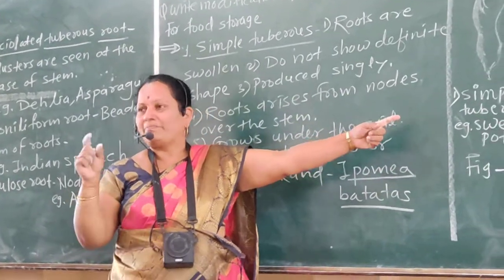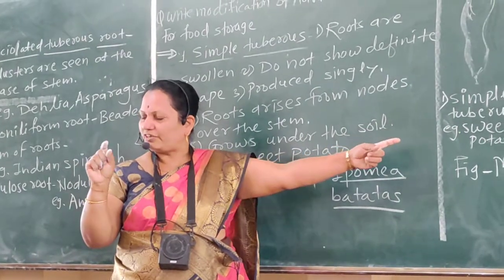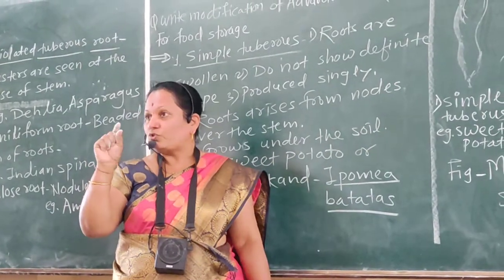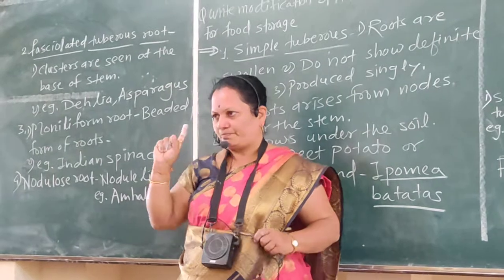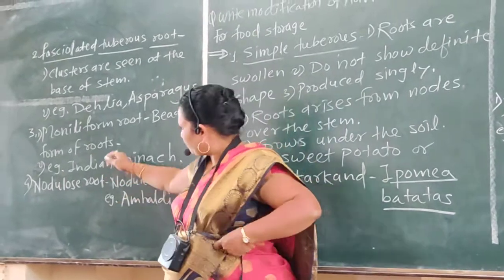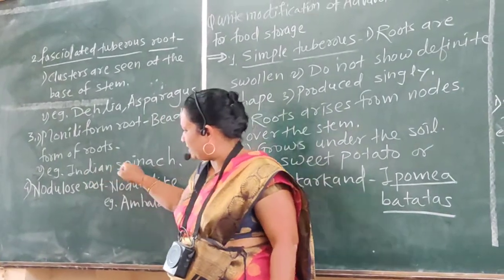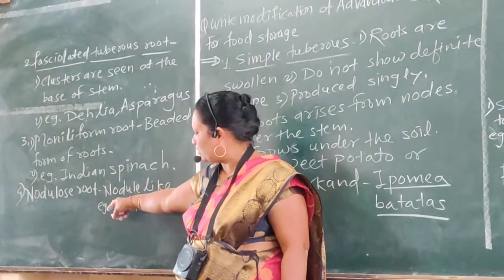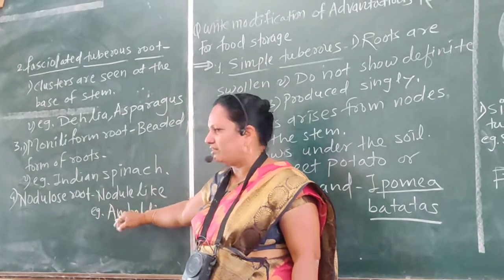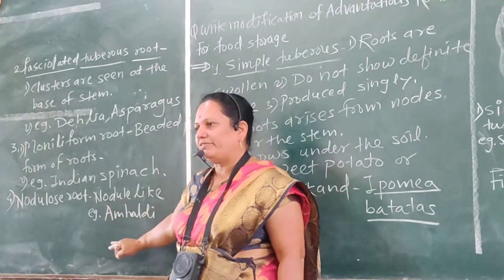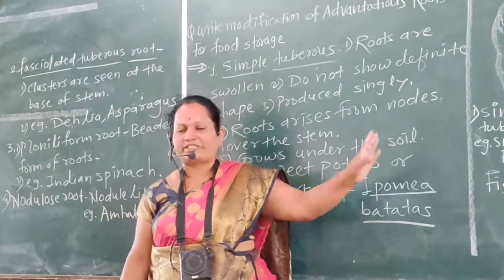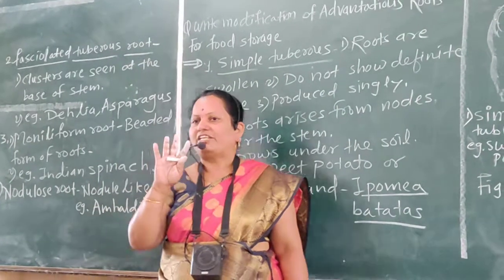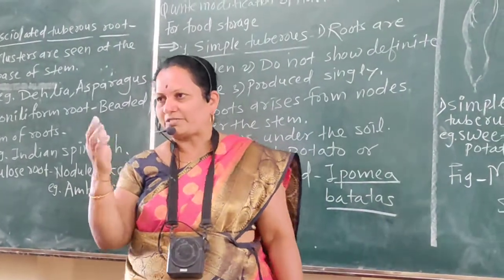Small branches of adventitious root converted into solar part which stores food. Example: Indian spinach. Next: nodulated root, present in Ambeharata. Nodulite structure. How many types of adventitious roots for storage of food? Four types.